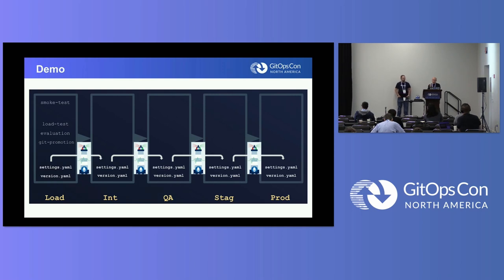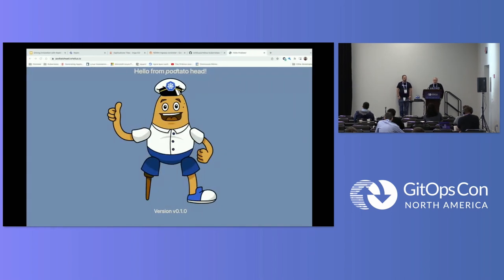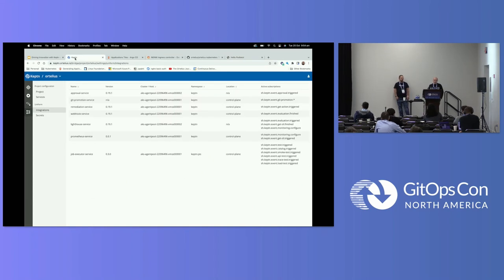When using Keptn we can have a quality gate between environments where you define your SLOs and SLIs as the accepted criteria to progress to the next environment. For load testing we're running K6, then querying metrics from Prometheus, and if that passes we do the git promotion — copying the settings file from load into integration testing. Argo or Flux picks that up, sees the change, and triggers Keptn with a cloud event, starting the workflow again.